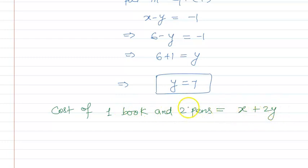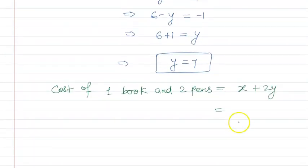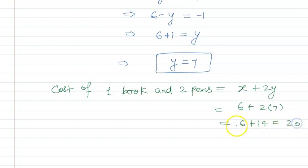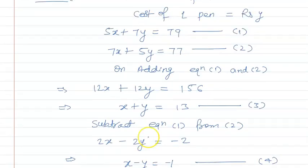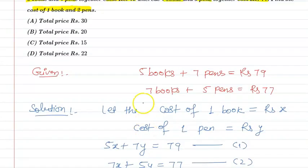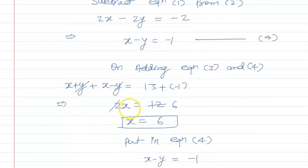Cost of one book we took as x and cost of one pen as y, so for two pens we multiply by 2. Putting in x equal to 6 and y equal to 7: 6 plus 2 into 7, that will be equal to 6 plus 14, which equals 20. So the total cost will be rupees 20. Checking the options, option B is the correct answer.